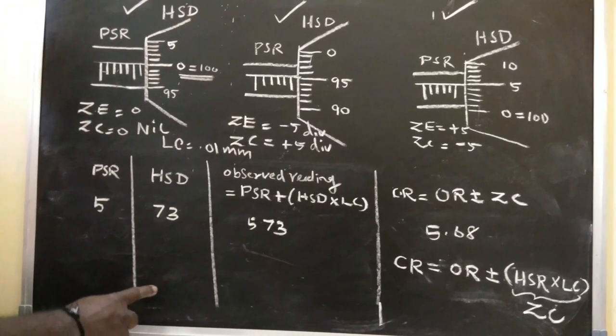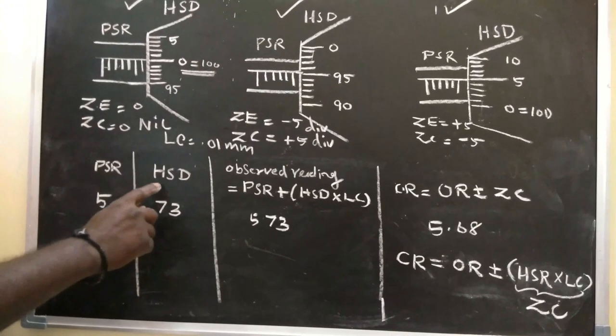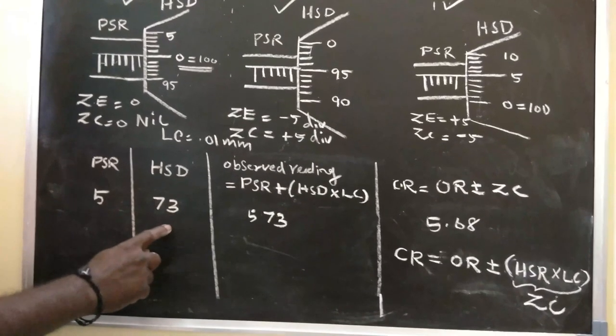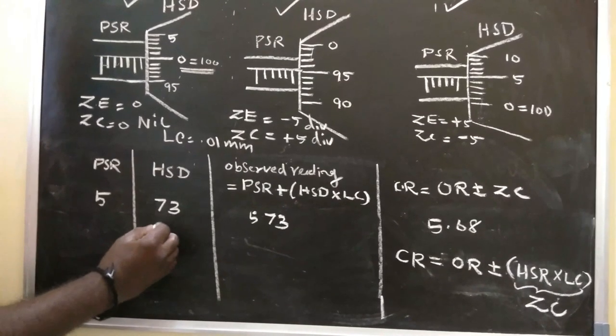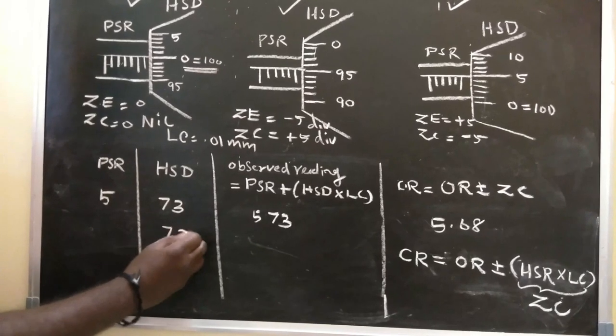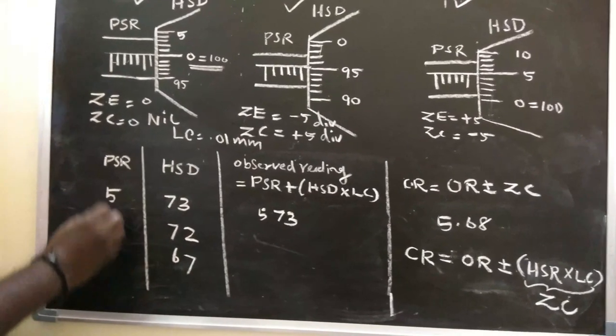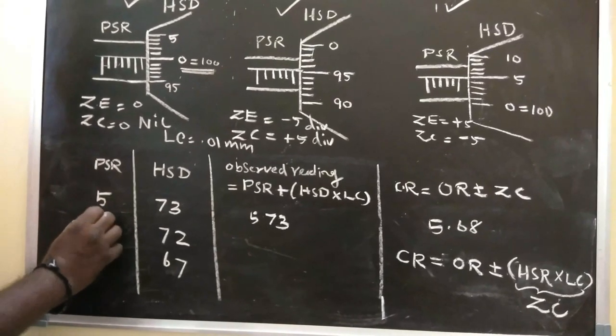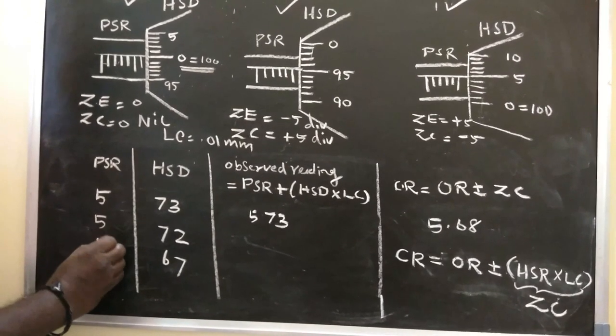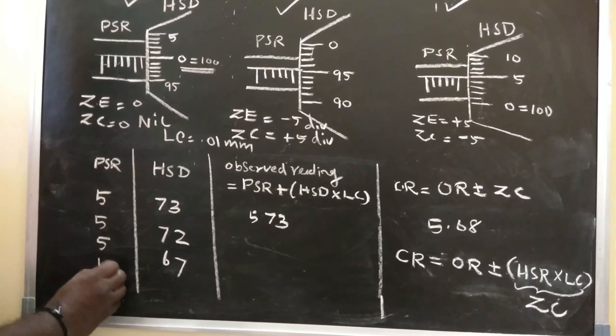If you have any changes in the head scale division, note that HSD values like 73, 72, or 67 may vary, but the pitch scale reading remains constant at 5. The PSR stays the same even when HSD changes.